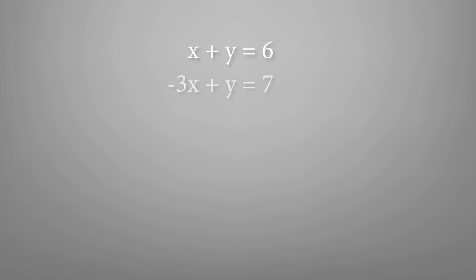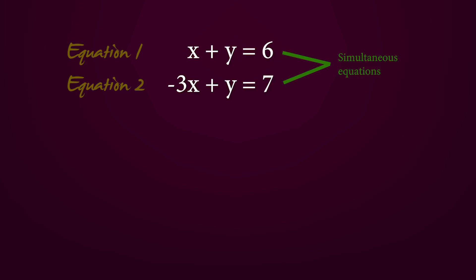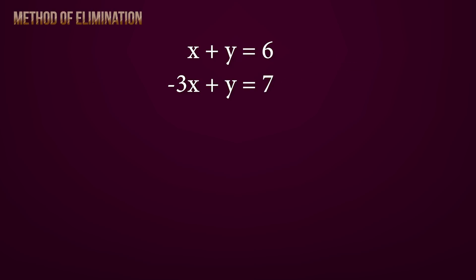Now consider these two equations: x plus y is equal to 6, and negative 3x plus y is equal to 7. These are called simultaneous equations. Simultaneous equations are two equations with two unknowns — in this case the unknowns are x and y. They are called simultaneous because they must both be solved at the same time.